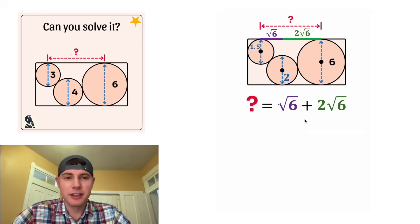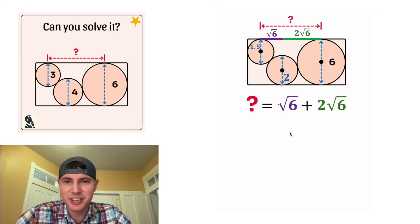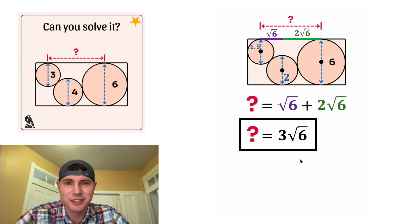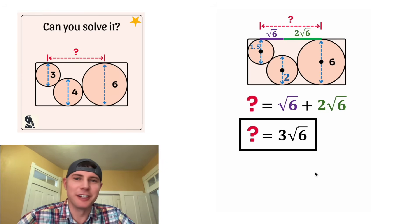So now we have the question mark. It's going to be equal to the purple root six plus the green two root six. And root six plus two root six is equal to three root six. And that is the answer to our question. Let's put a box around it. How exciting. I just got a haircut. What do you guys think?